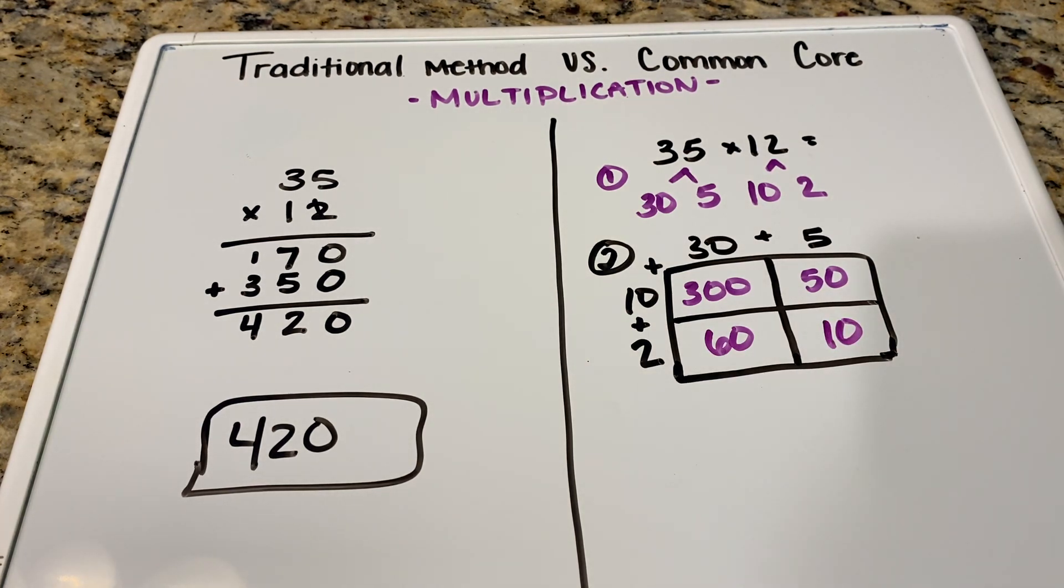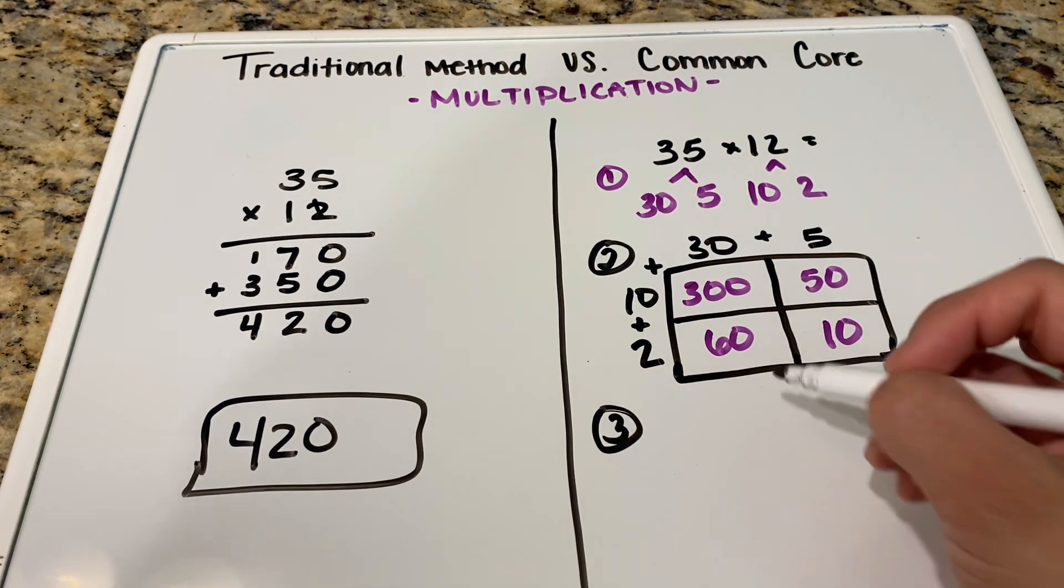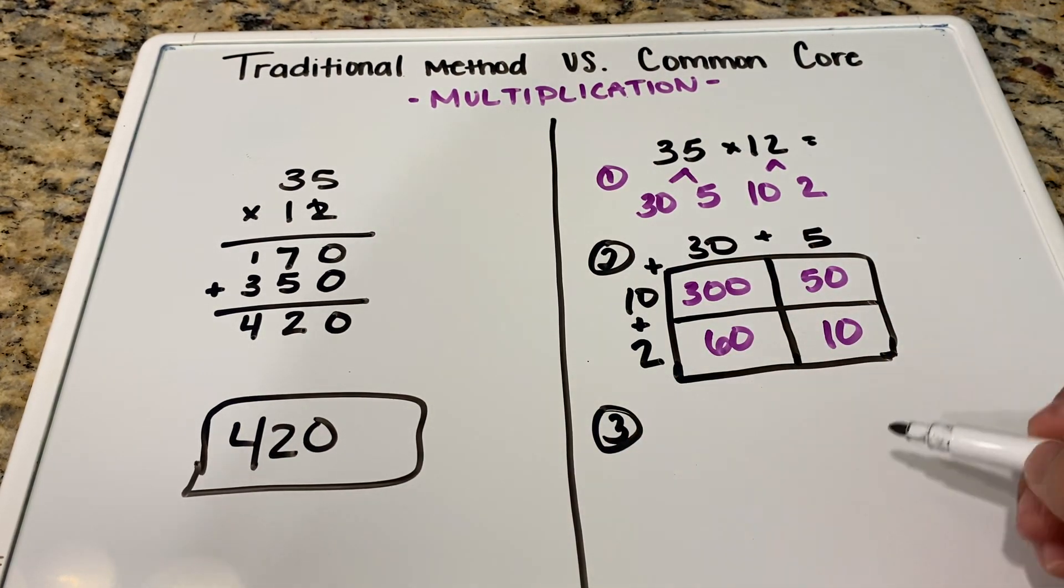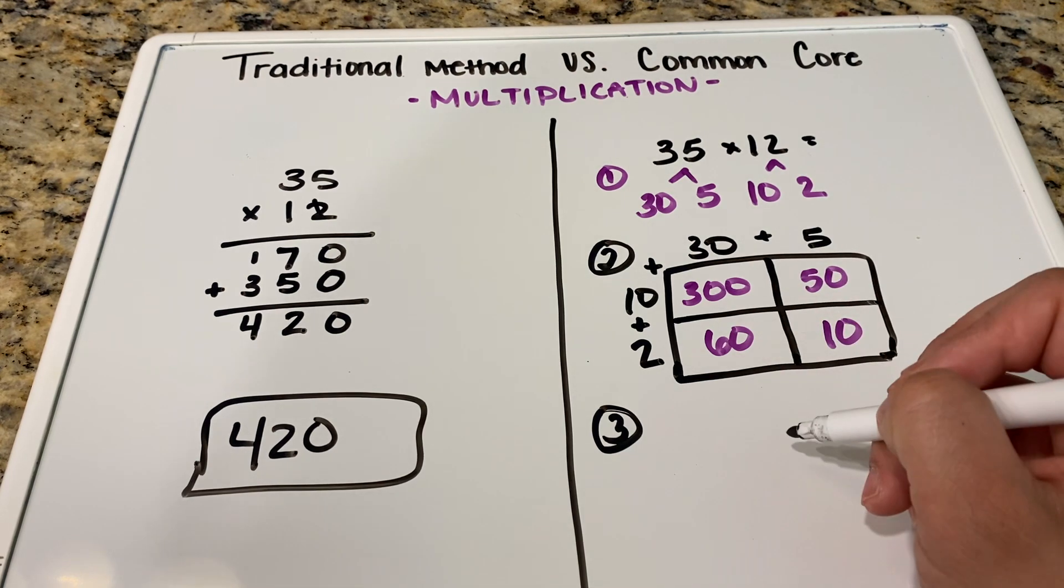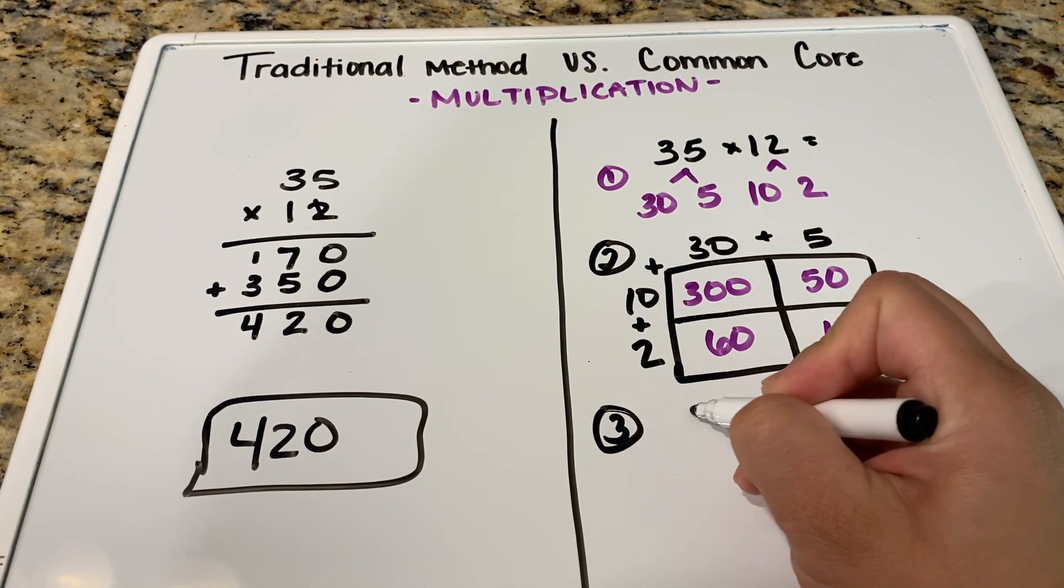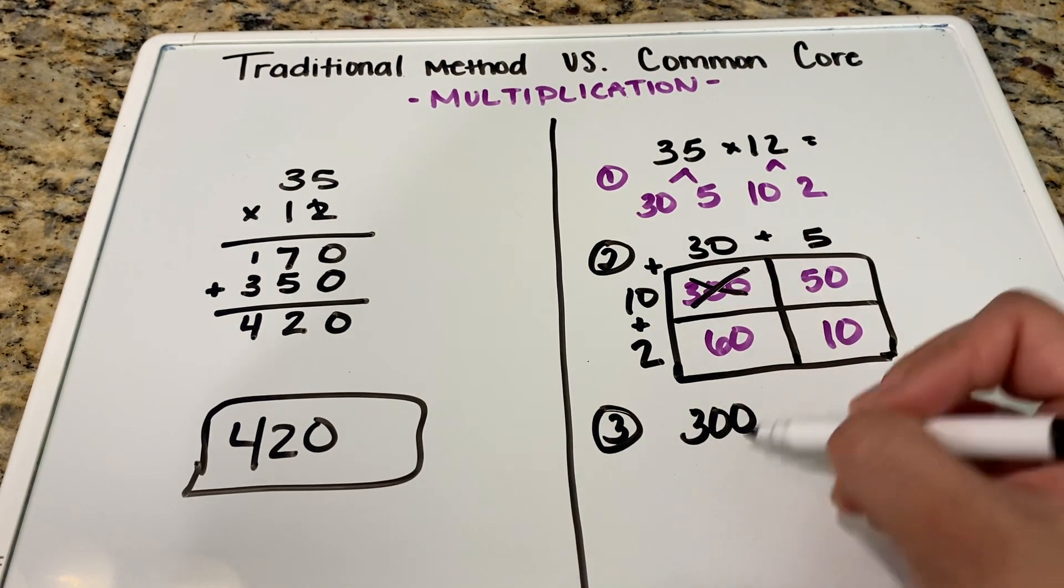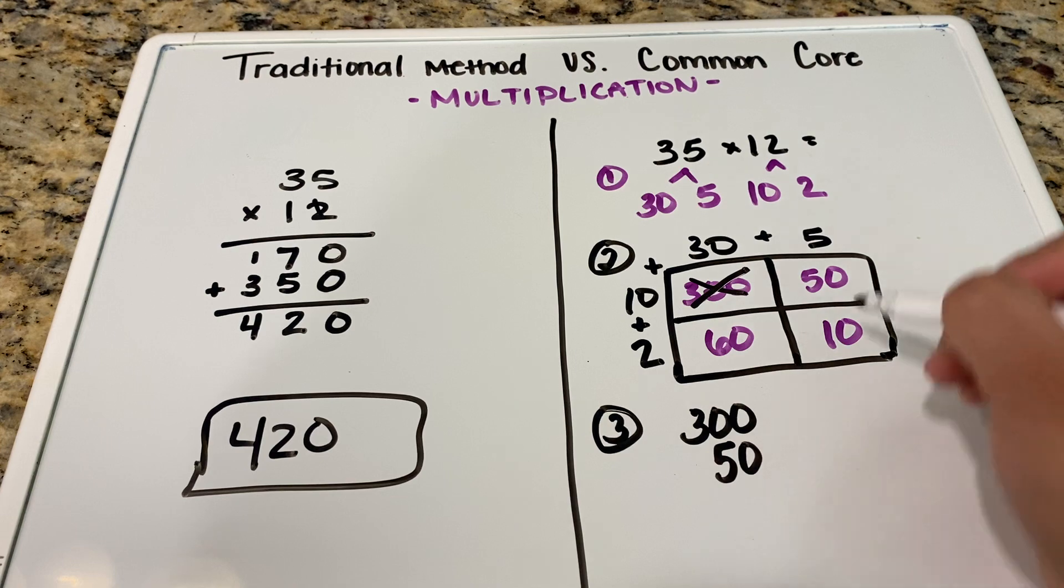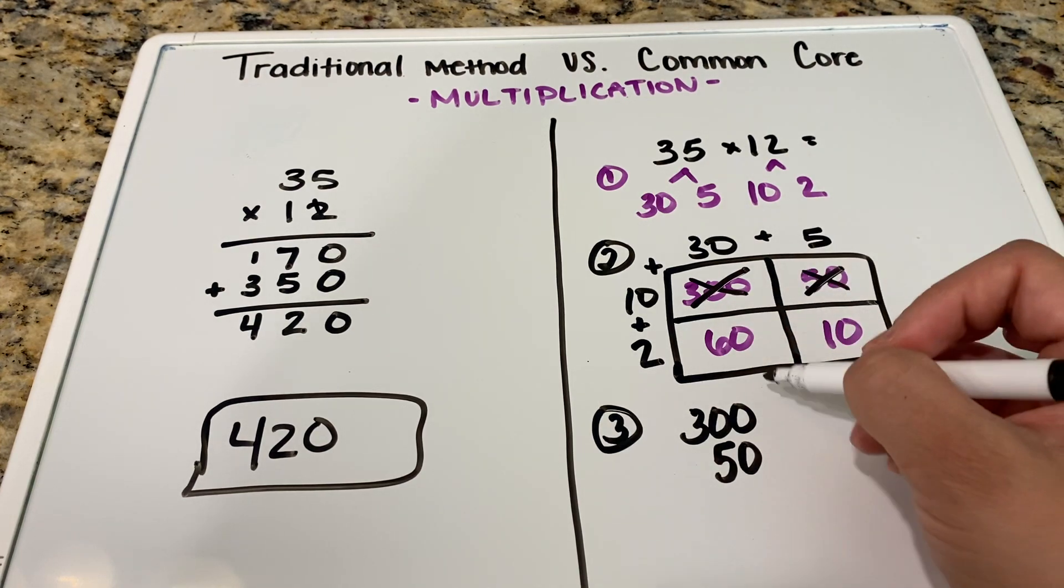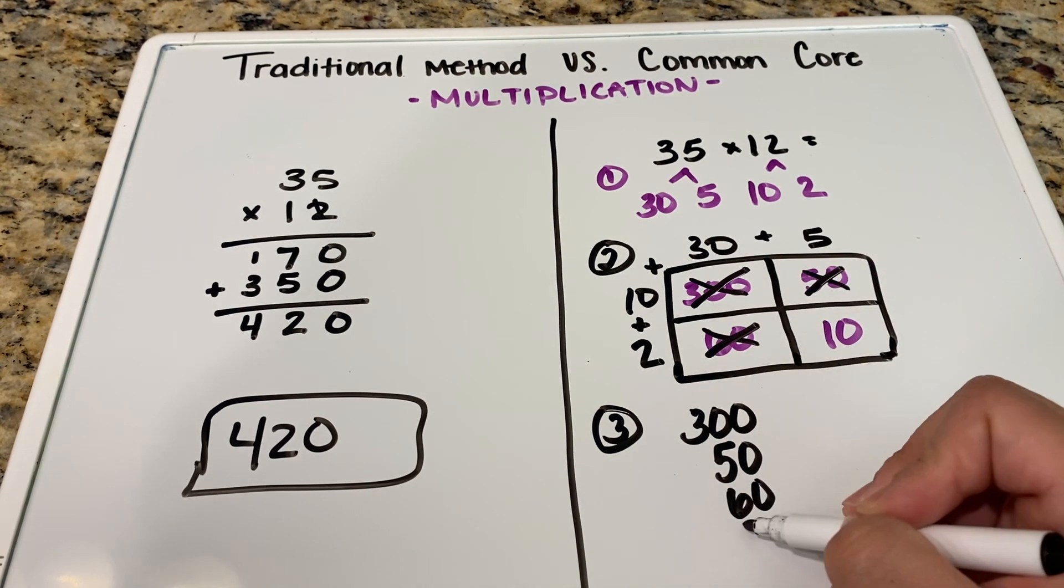All right. Now that we have all of our boxes completely filled out, we're going to go ahead and go to step three. So step three, we're going to bring everything that's in the purple out and we want to add everything up. And the best way to do that is to add it all up straight down. So we have 300. And I like to cross them off as we go. And we have 50. It doesn't matter the order that we put it down in. We have 60. And we have 10.